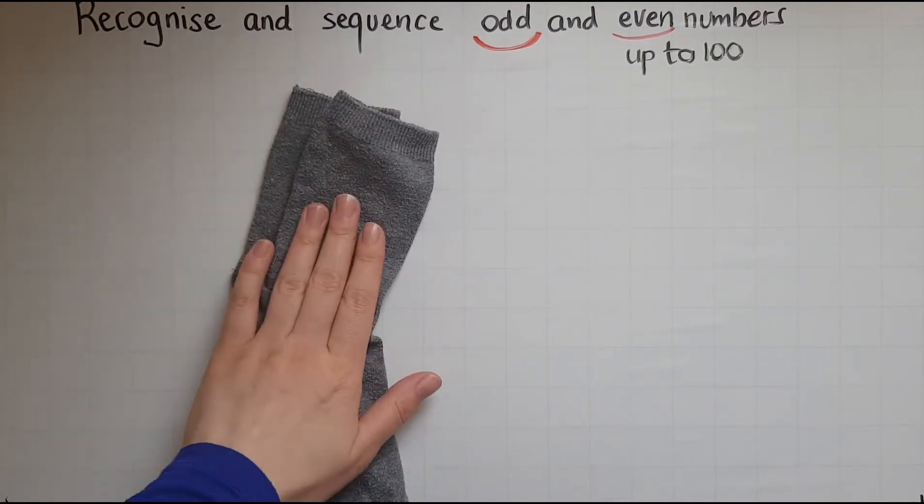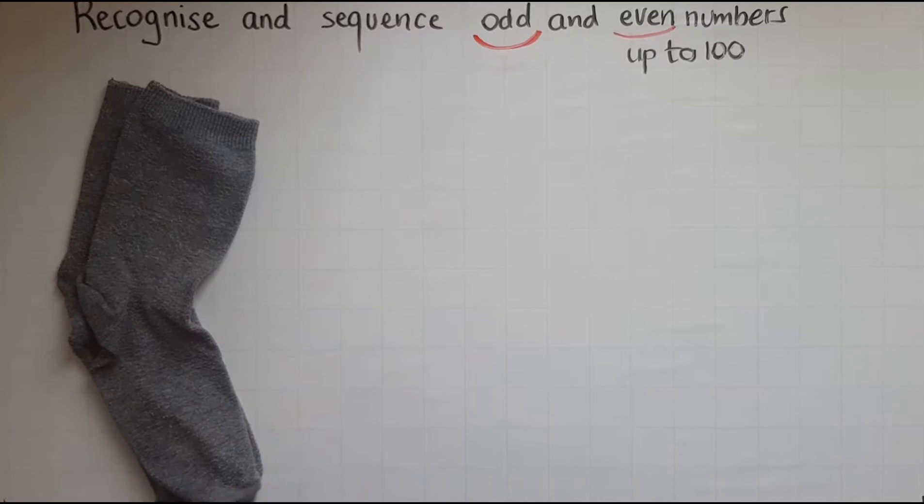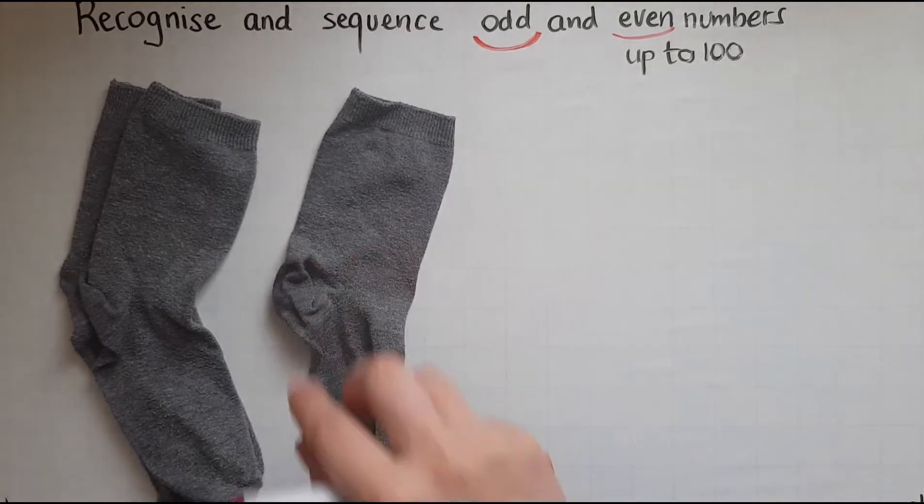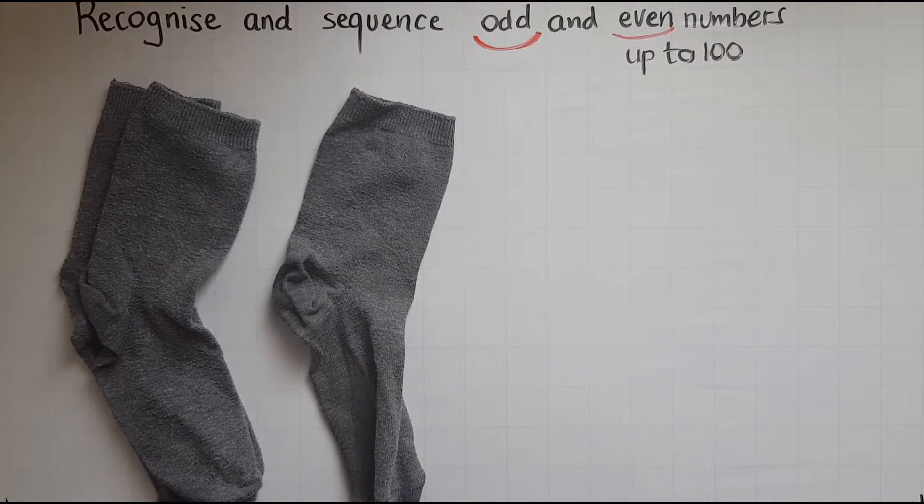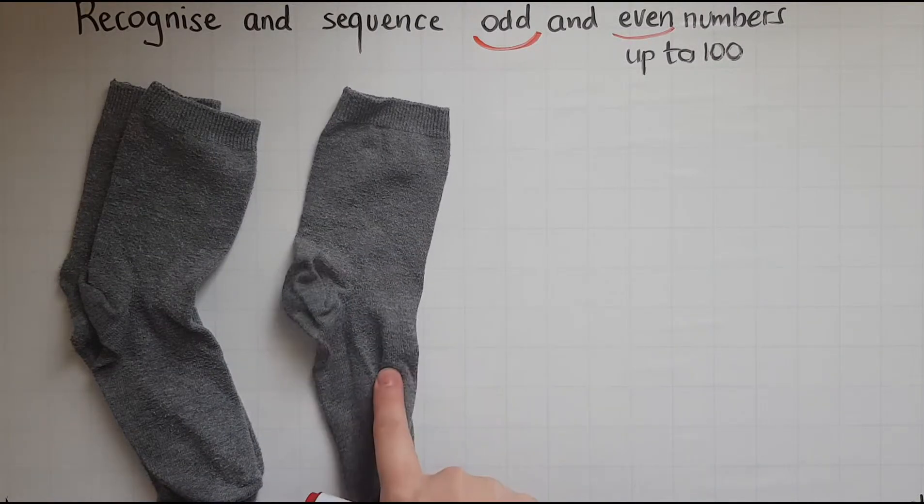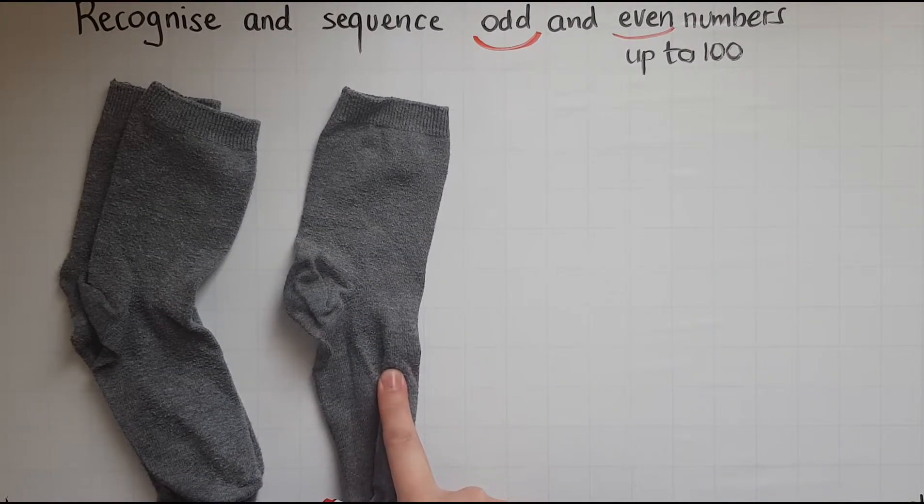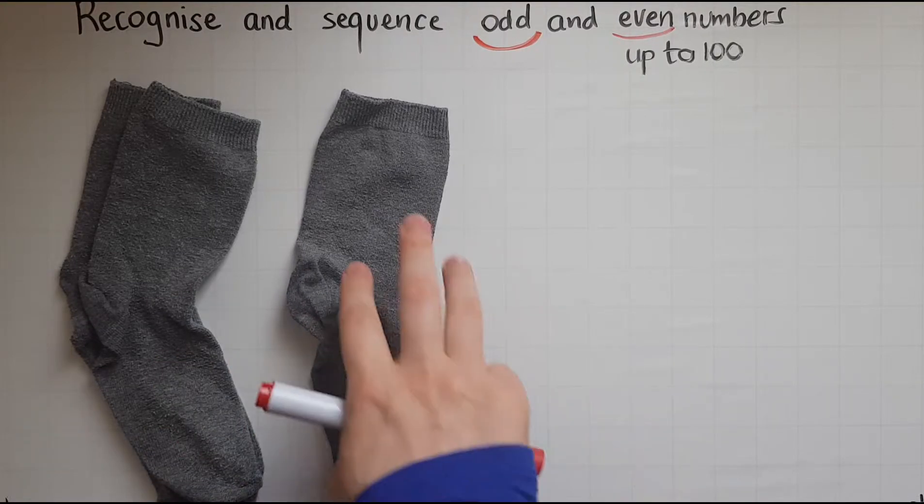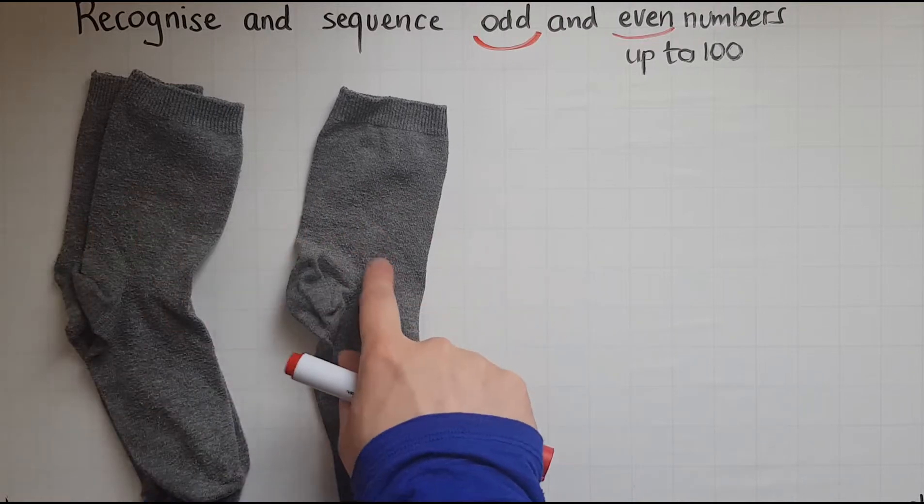So number two is even. Then I have another sock. Can I make another pair with that? No, I can't. So number three is odd because I could make a pair, but there is still one left.